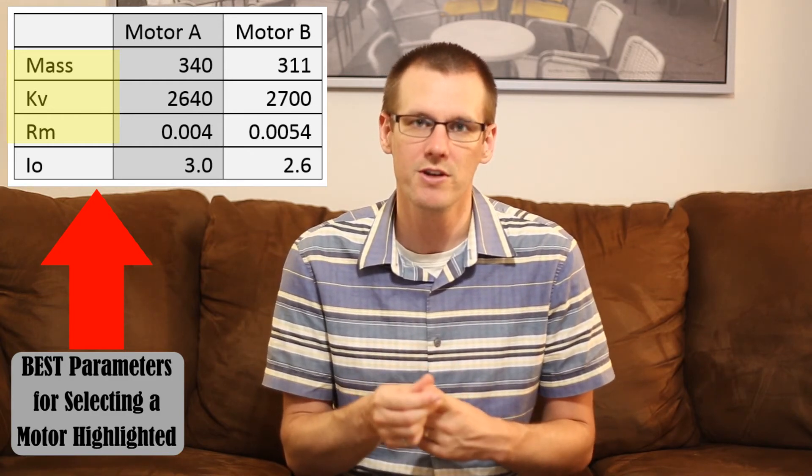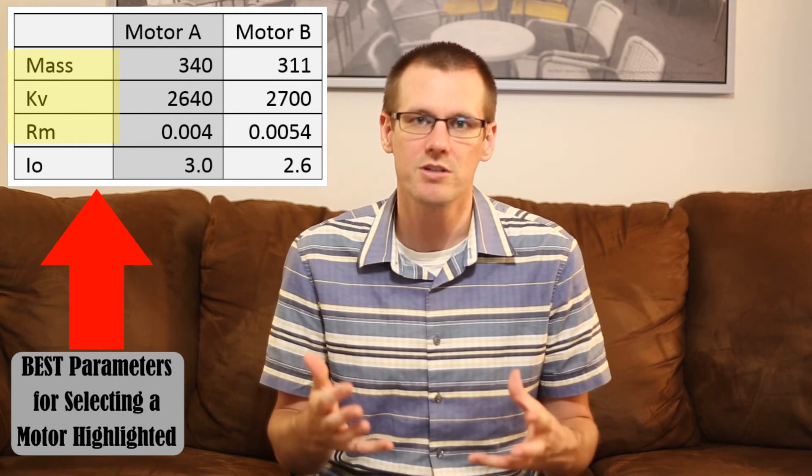In this one, we could see that motor A is sitting at 0.004 versus our 0.0054. Motor A is going to be more efficient and allow more current to be dumped at a high power output level. And this is again saying motor A is the clear winner here.